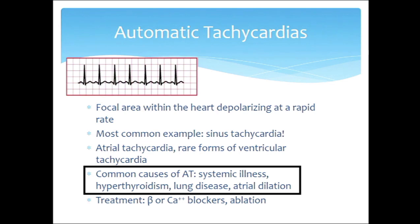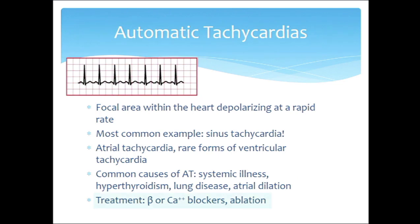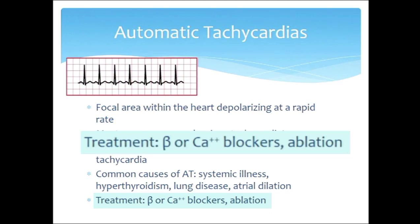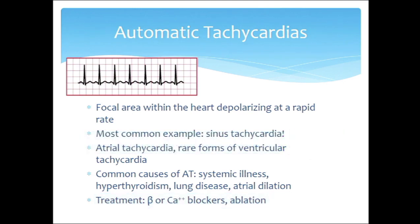Automatic tachycardias are often seen in the setting of severe systemic illness, especially if it involves lung disease — unhappy lungs predispose to atrial automatic tachycardias. Dilated atria with scarring can also predispose to atrial tachyarrhythmias. Hyperthyroidism can set you up for this as well. The treatment for automatic tachycardias is primarily beta blockers and calcium channel blockers to suppress the automatic activity driving the process. If it's not resolving and isn't responding to medication, ablation is an option.